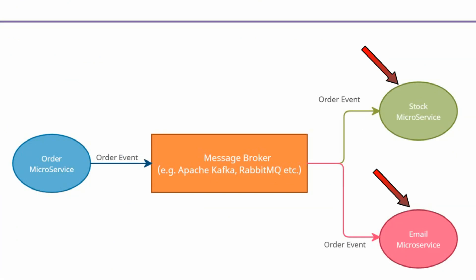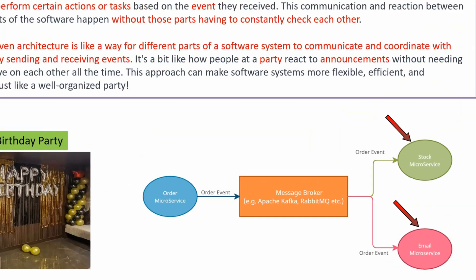Here you can see a stock microservice and an email microservice, and these act as consumers. These microservices will listen to the queue or topic in the message broker. If any order event is there, they will consume the order events, and based on the event, each microservice will perform a certain task.